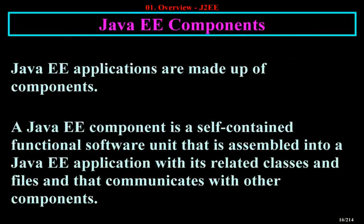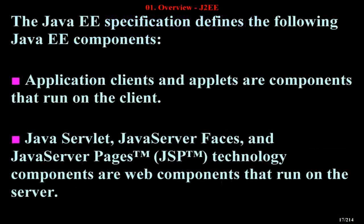Java EE applications are made up of components. A Java EE component is a self-contained functional software unit that is assembled into a Java EE application with its related classes and files and that communicates with other components. The Java EE specification defines the following Java EE components.